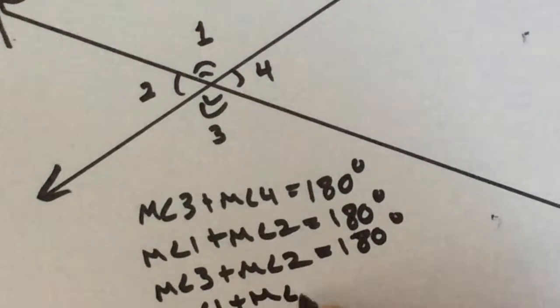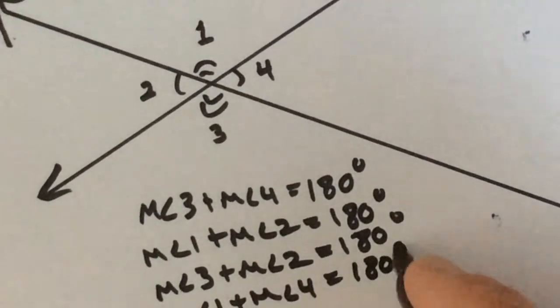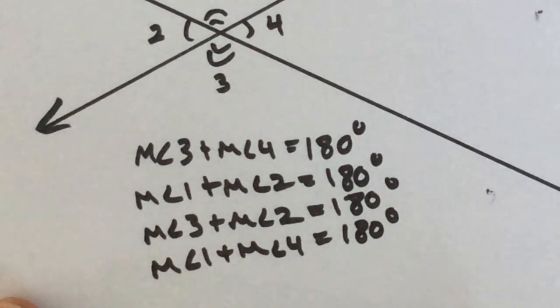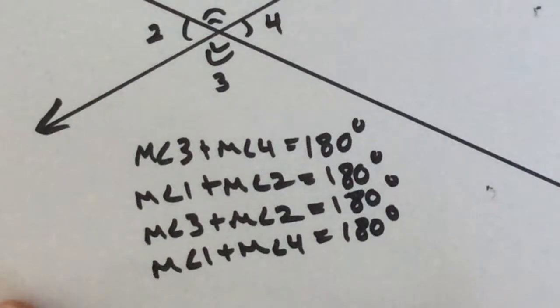So we know that all of those equal 180 degrees and what else do we know? What do we know about the measures of the vertical angles? They are. So which ones are vertical angles?